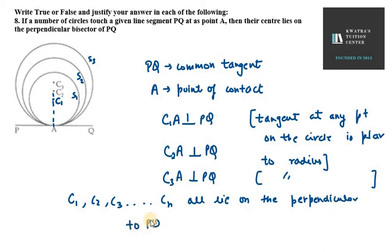We have proved that C1A is perpendicular to PQ, C2A is perpendicular to PQ, and C3A is perpendicular to PQ.